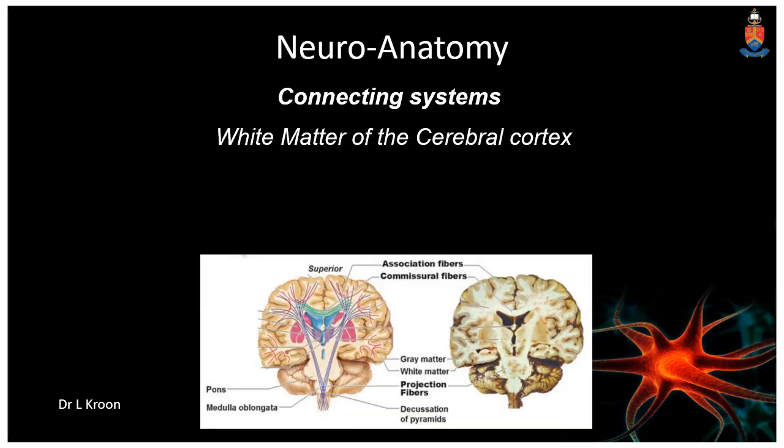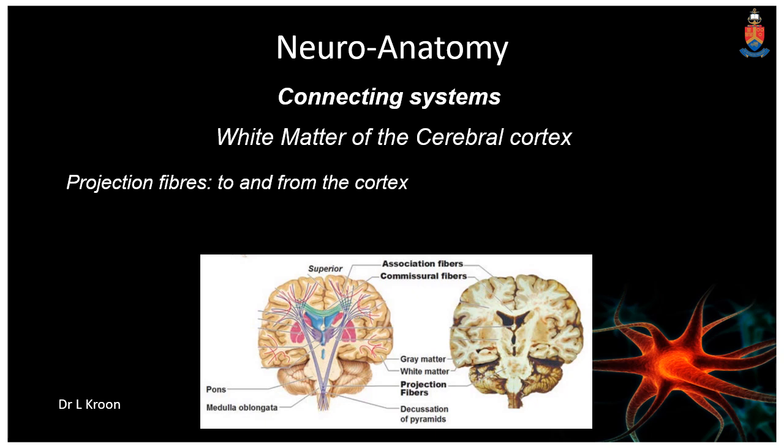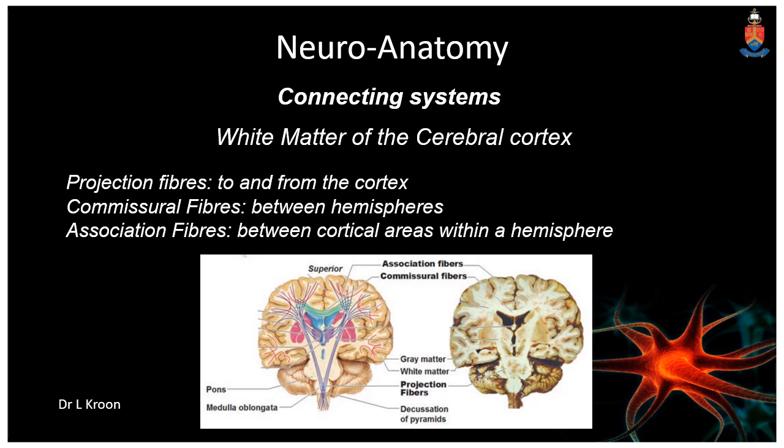Now I'm going to briefly look at the connecting systems of these areas, as they play a vital role in higher functioning by connecting each of these systems to each other. There are three primary different connecting systems in the white matter: these are the projection fibers, which travel to and from the cortex; the commissural fibers, which contain connections between the hemispheres; and lastly, the association fibers, which mediate connections between cortical areas within a given hemisphere.